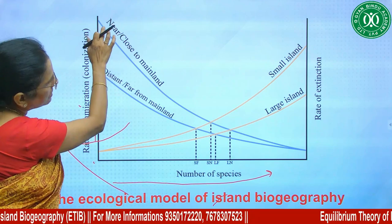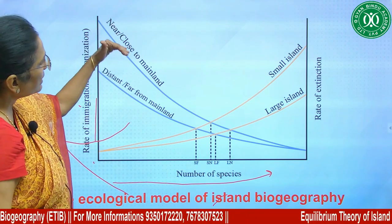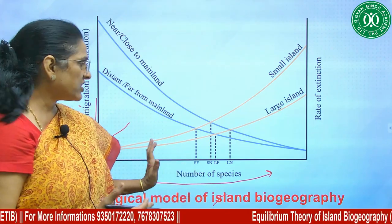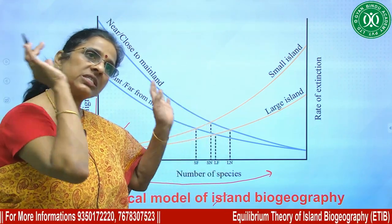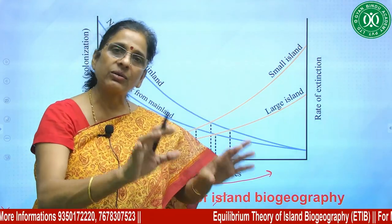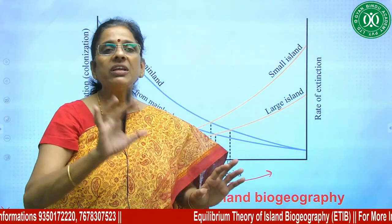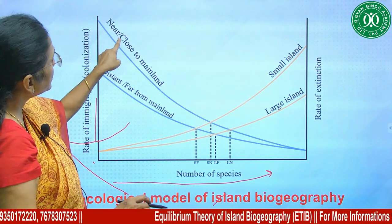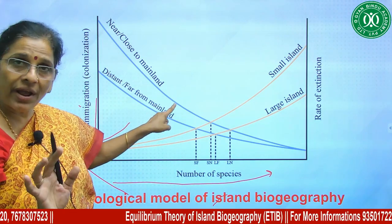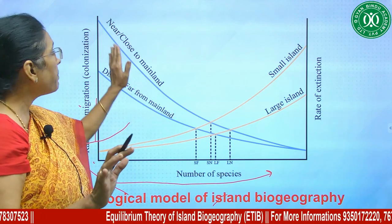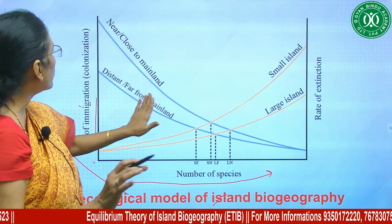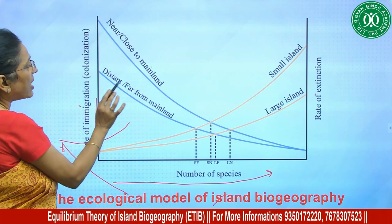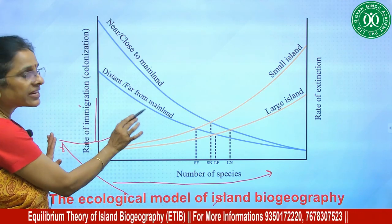As the species number grows, the rate of immigration declines. Islands that are near or close to the mainland have a greater rate of immigration, as you can see in the graph. Compared to islands that are distant or far from the mainland, the near islands show a higher immigration rate.